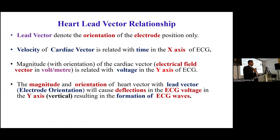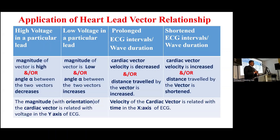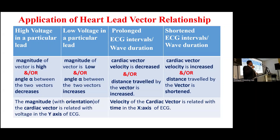The lead vector denotes the orientation of the electrode position, and the velocity of the cardiac vector is related with time on the x-axis, while magnitude of the cardiac vector is related with voltage on the y-axis. High voltage in a particular lead is either due to high magnitude of the vector or a decreased angle between the two vectors. Low voltage occurs when the magnitude is low or the angle increases. In prolonged ECG intervals or wave duration, cardiac vector velocity is decreased or distance travelled is increased; in shortened intervals, velocity is increased or distance is shortened.